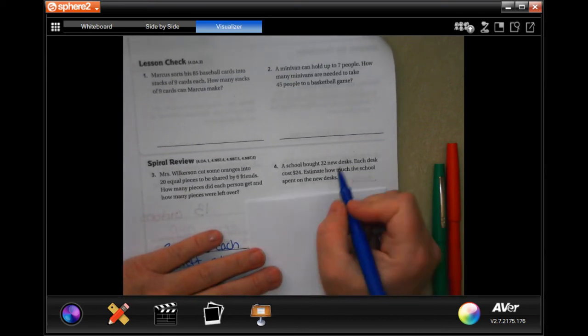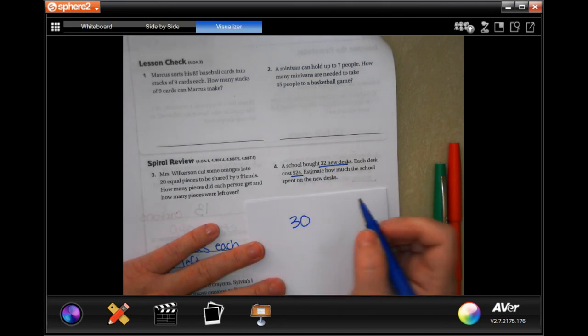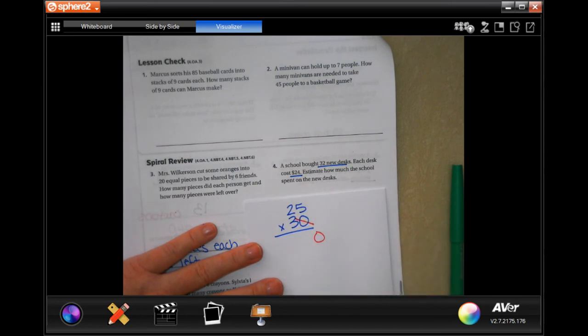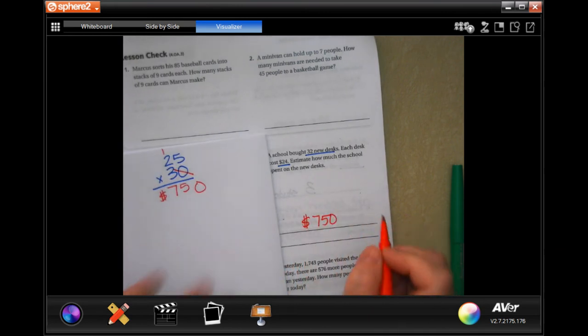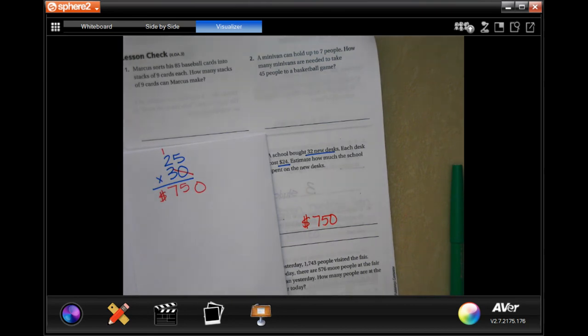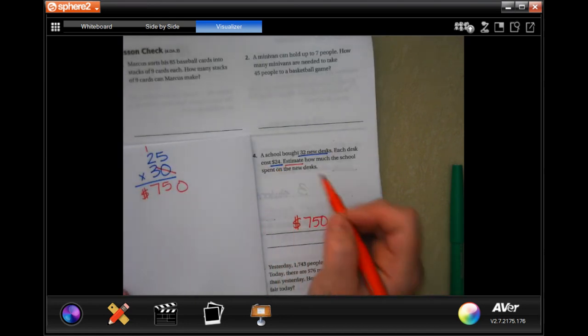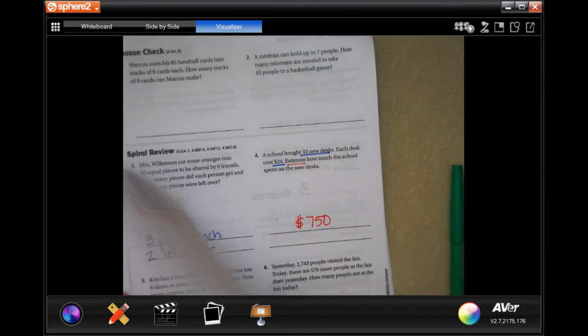A school bought 32 new desks. Each desk costs $24. Estimate how much the school spends on new desks. Well, 32 would round to 30, and 24, let's round it to 25. See that 0 right there? 3 times 5 is 15. Carry the 1. 3 times 2 is 6, plus 1 is 7. $750. It's an estimate. As long as you're being reasonable. Could you do 30 times 20? Absolutely. Write your work down.